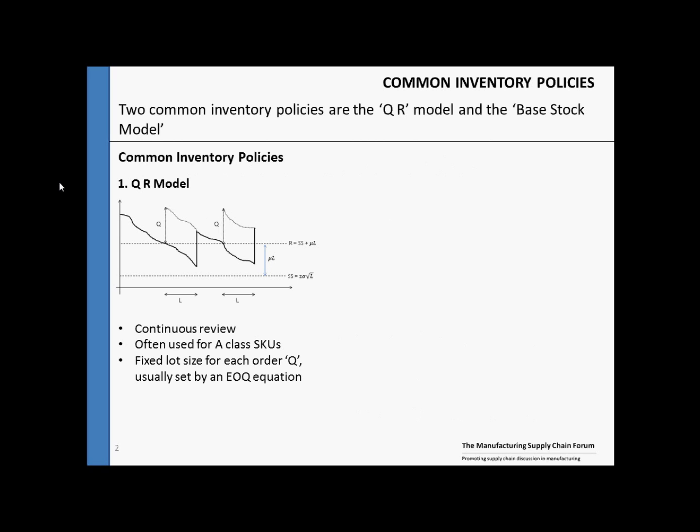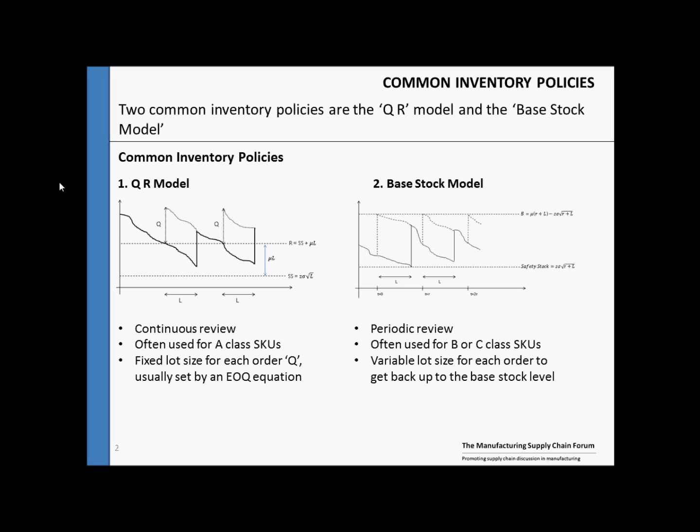There are two common inventory policies we're going to look at today. The first is known as the Q-R model, sometimes also called the min-max model. This is a continuous review policy often used for A-class SKUs. Our second is the base stock model. This is a periodic review policy often used for B or C-class SKUs.